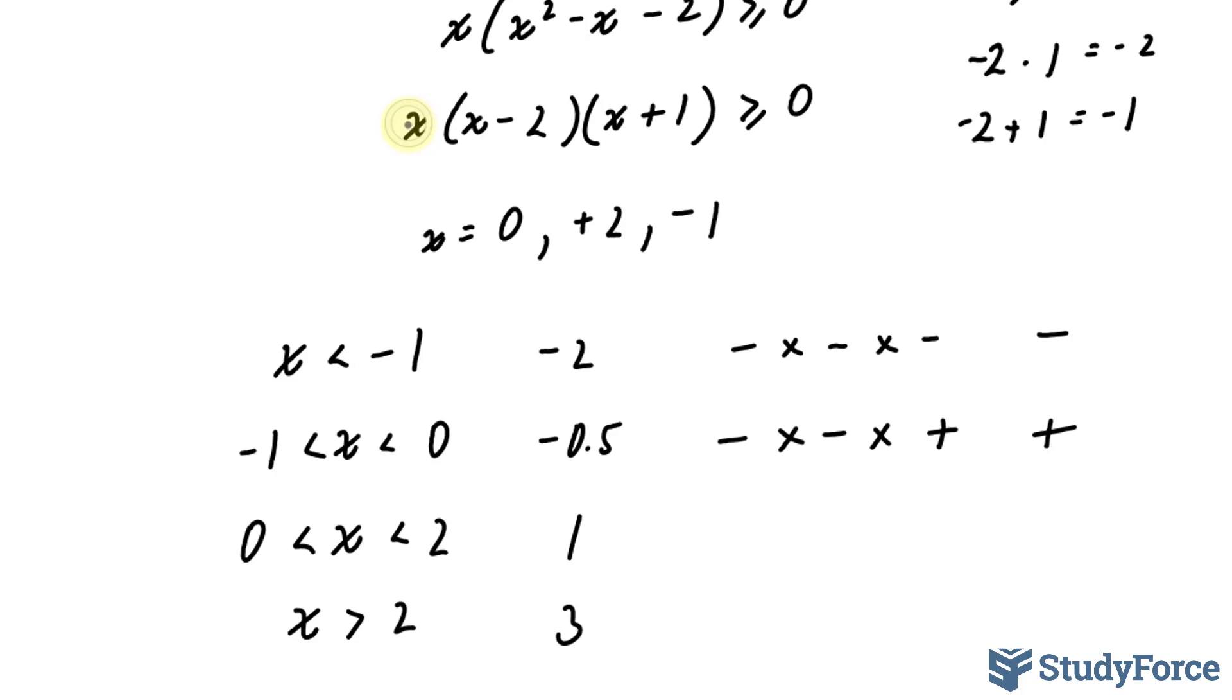Let's put in 1. 1 is a positive number. 1 minus 2 gives us a negative number. 1 plus 1 gives us a positive number. Positive times negative, that's negative. Negative times positive, still negative.